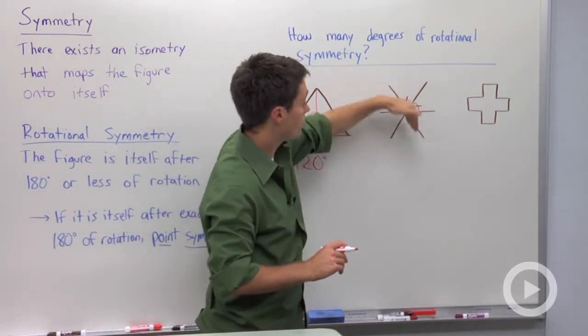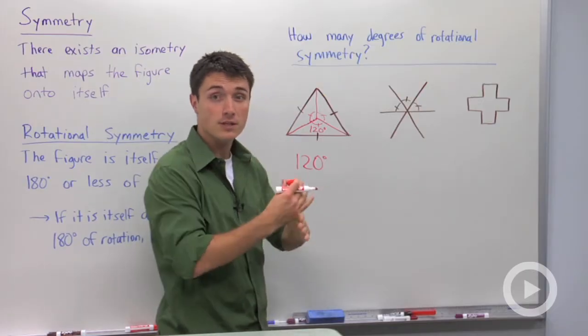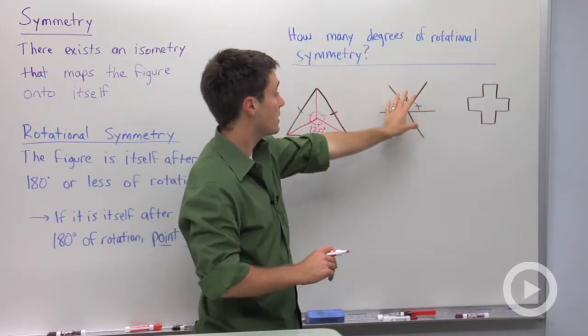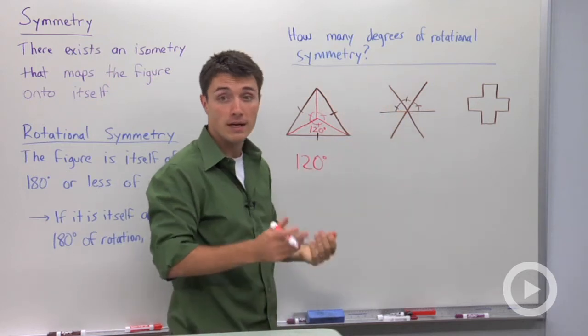If we look at this figure right here, we have one, two, three congruent line segments intersecting each other. And it's pretty clear, again, that I could rotate this and have it map back onto itself.